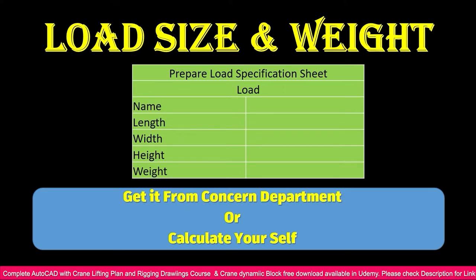You need to prepare a load specification sheet. Include the load name — for example, tube bundle, vessel, or other cargo — and its dimensions: length, width, height, and weight. Before making the load block, you need to get this information from the concerned department or the company that manufactured or arranged that load, along with their drawing.